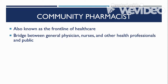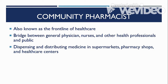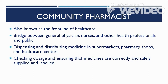The community pharmacist is also a bridge between general physicians, nurses, and other health professionals and the public. When a doctor prescribes medicine to a patient, the patient will go to the pharmacy and the community pharmacist will give the drug to the patient and explain its use, thereby connecting the patient to the prescriber. Community pharmacists also distribute drugs in supermarkets, pharmacy shops, and healthcare centers. Any establishment that sells or dispenses drugs must have a pharmacist. Checking dosage and ensuring medicines are correctly and safely supplied and labeled are also responsibilities of the community pharmacist.